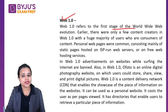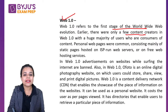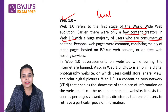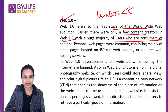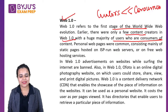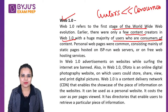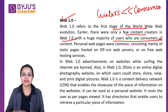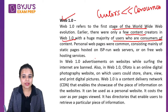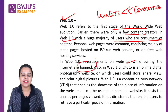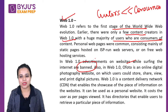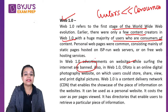Web 1.0 refers to the first stage of the World Wide Web. Earlier there were only a few content creators with a huge majority of users who were consumers. Creators were very few and consumers were very many. Now things are different — we all are creators, especially on Instagram or Facebook. In Web 1.0, advertisements on websites while surfing the internet were also banned, so there were no ads like we see today.